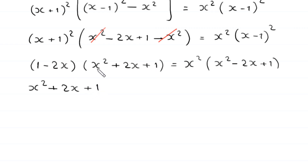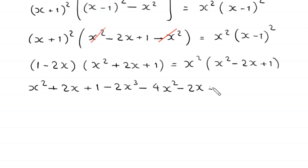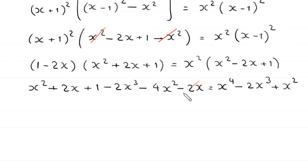Then negative 2x times x² = -2x³; negative 2x times 2x = -4x²; negative 2x times 1 = -2x. The right-hand side gives x⁴ - 2x³ + x². Now this -2x cancels with +2x, this x² cancels with x², and -2x³ cancels with -2x³.